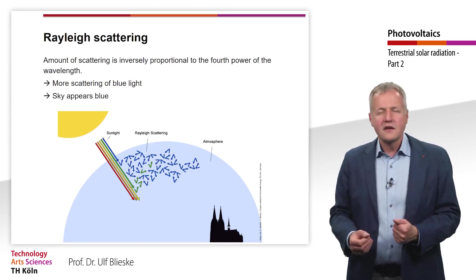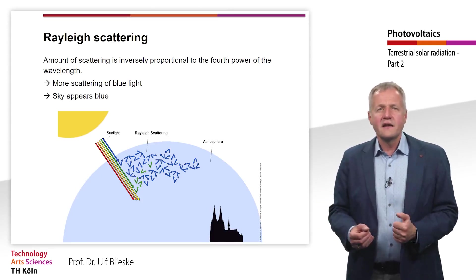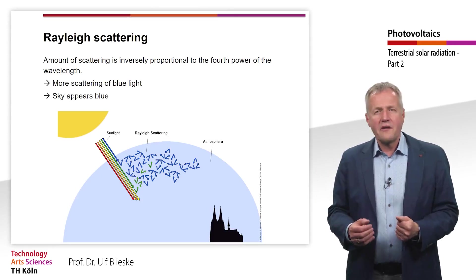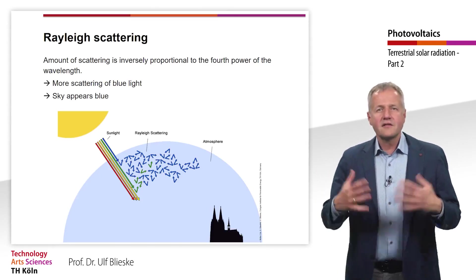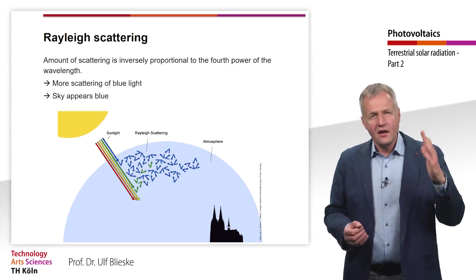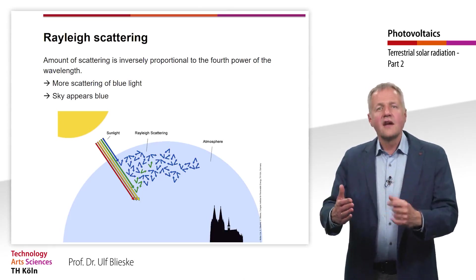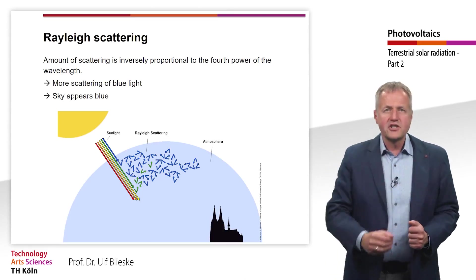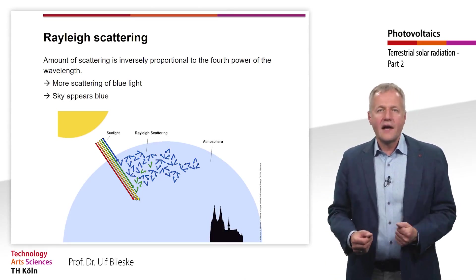On the other hand, since most of the blue light is scattered away, the remaining direct beam appears yellow when the sun has a high elevation angle, or reddish when the sun has a low elevation angle, where even green and yellow light will be largely scattered.